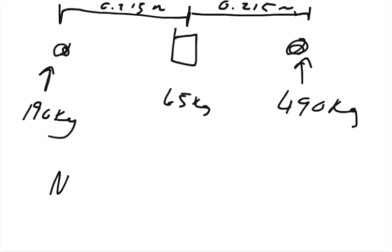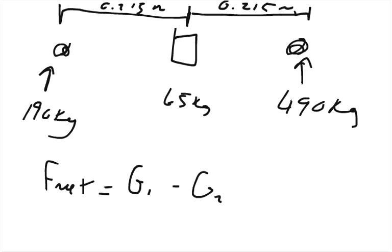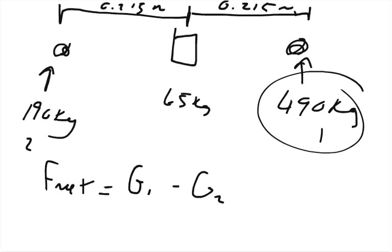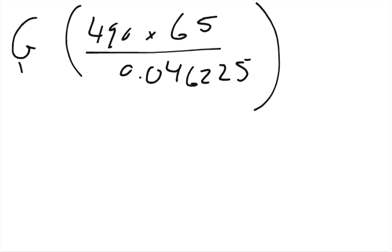The net force equals the gravitational force of 1 minus the gravitational force of 2. We'll call the 490 kg object mass 1, because my intuition tells me it will have the greater gravitational force — so in order to prevent a negative result, it needs to be first. G equals 6.673 times 10 to the negative 11th. So 490 times 65 equals 31,850.